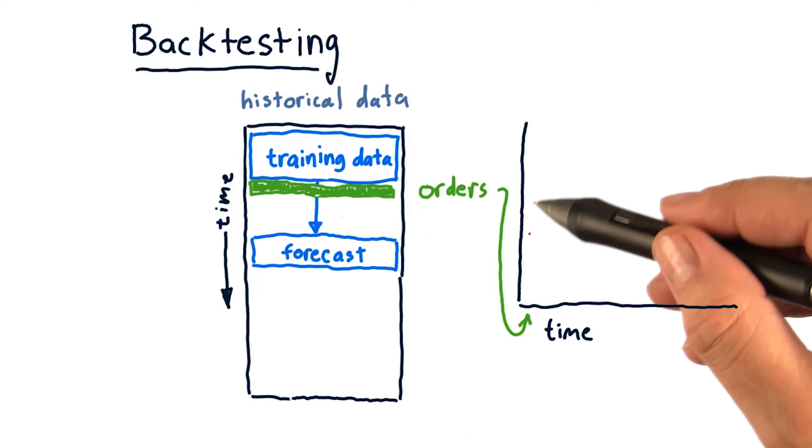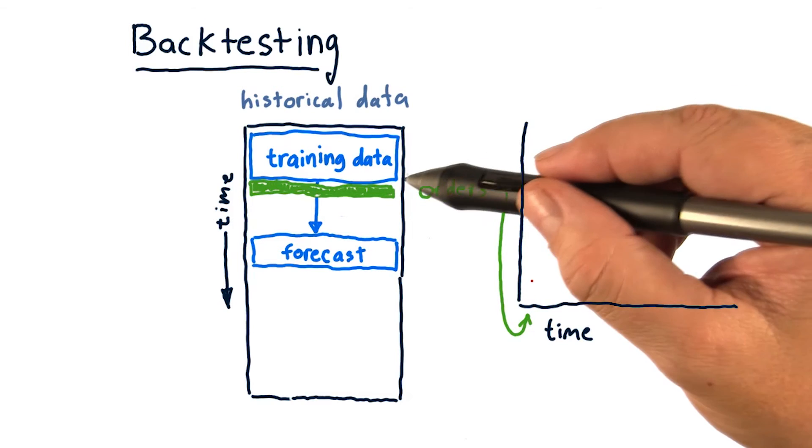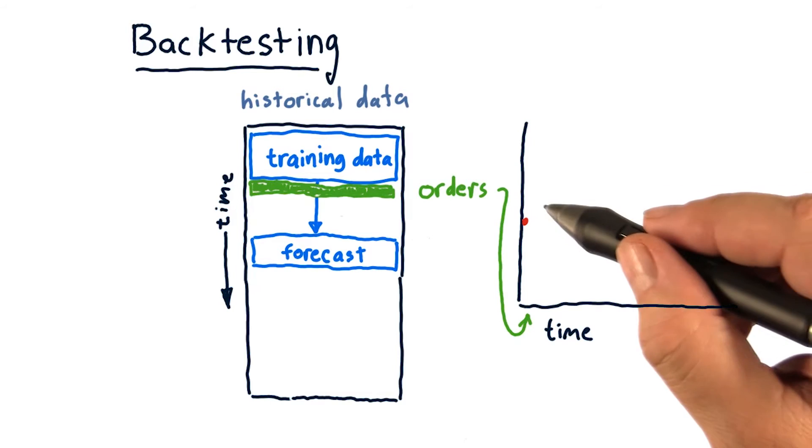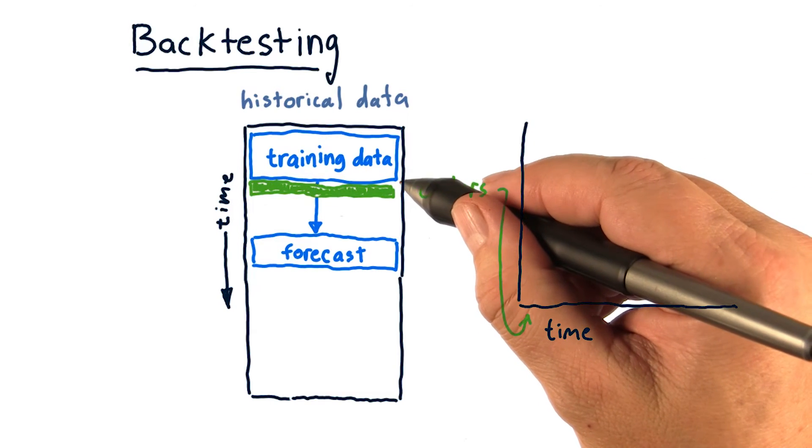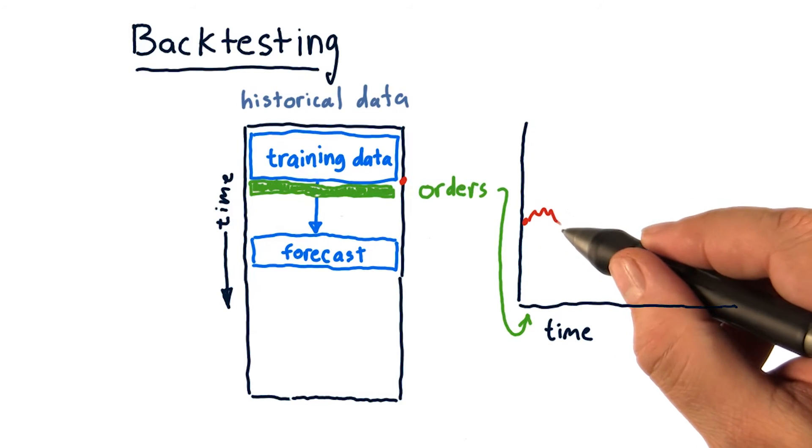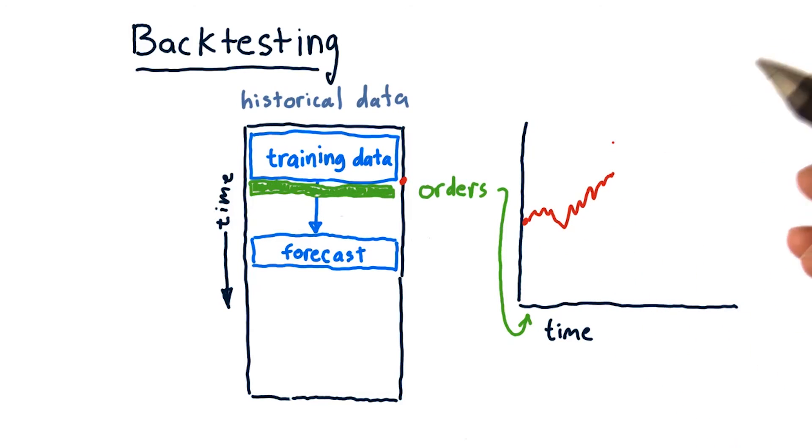So this time right here is the same as this time here. So we enter our positions on that date, which is the same as that date. And then we roll it forward and see what happens with the portfolio. Using software that we built in this class, you can measure things like Sharpe ratio, return, and so on for that portfolio.